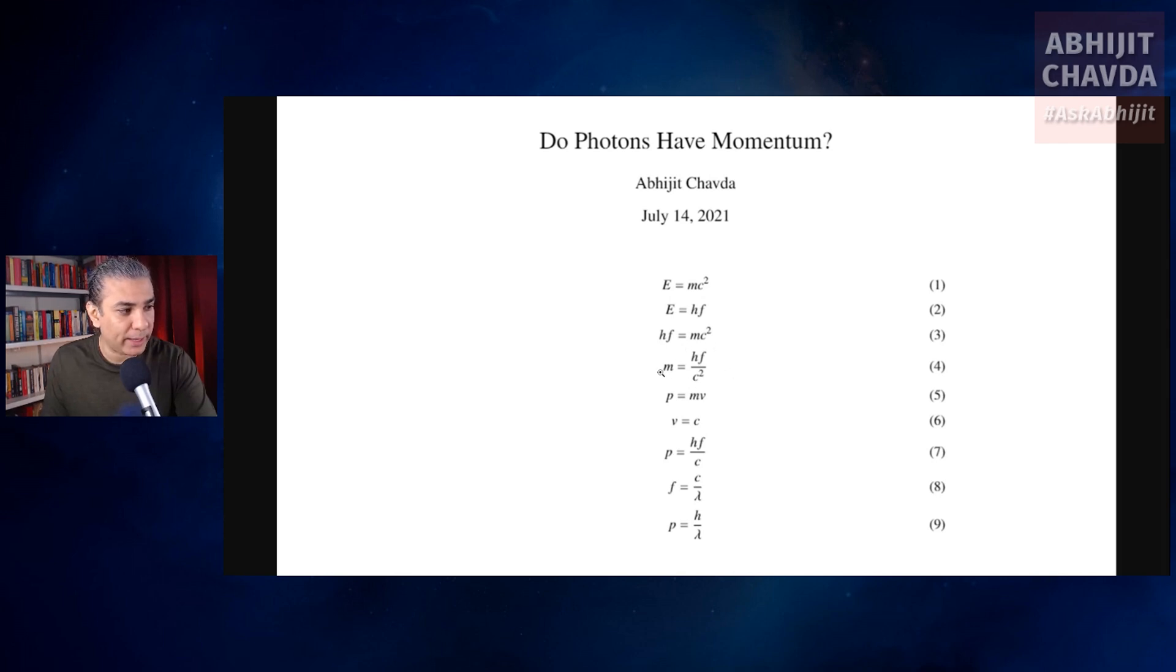You rearrange that, you get m equals hf by c squared. So the photon has a relativistic mass of sorts, an equivalent mass, which is given by h, Planck constant, multiplied by the frequency of the photon, divided by the square of the speed of light.